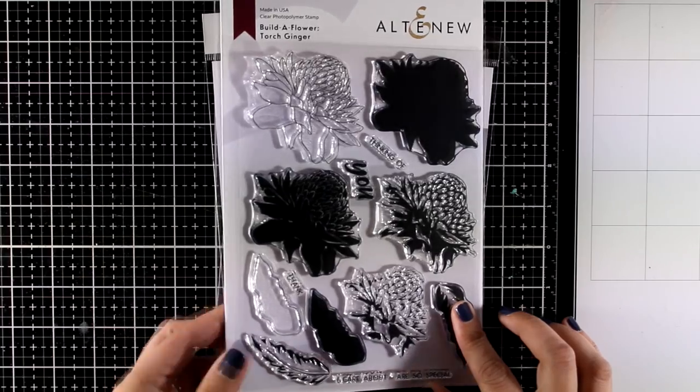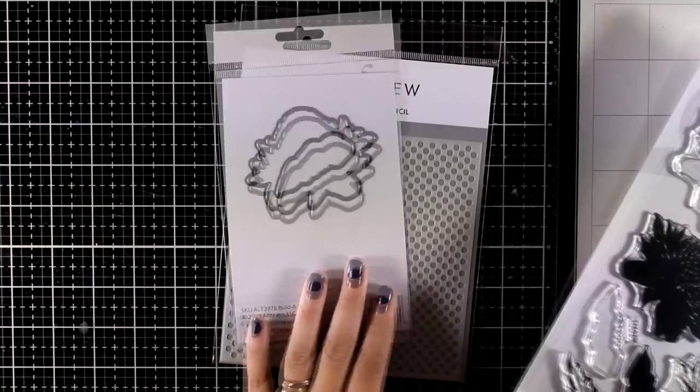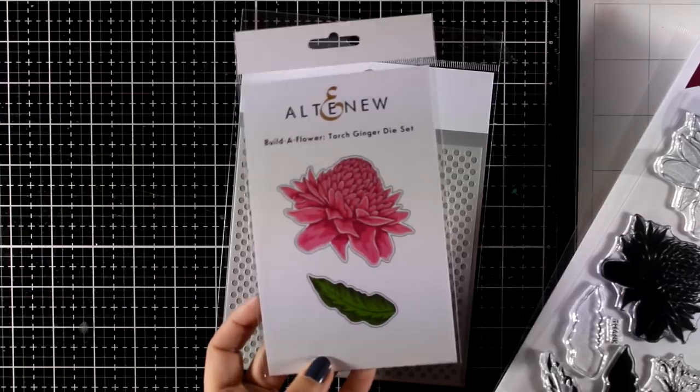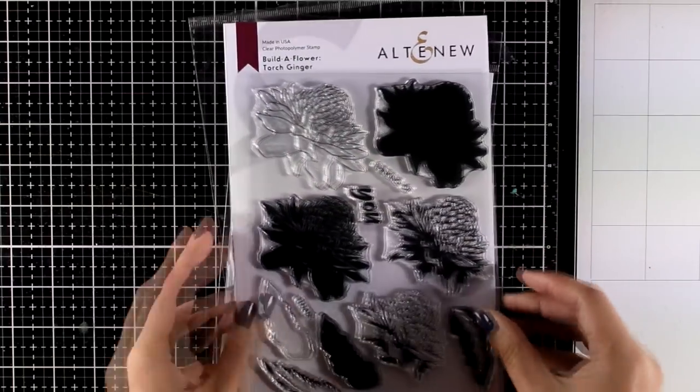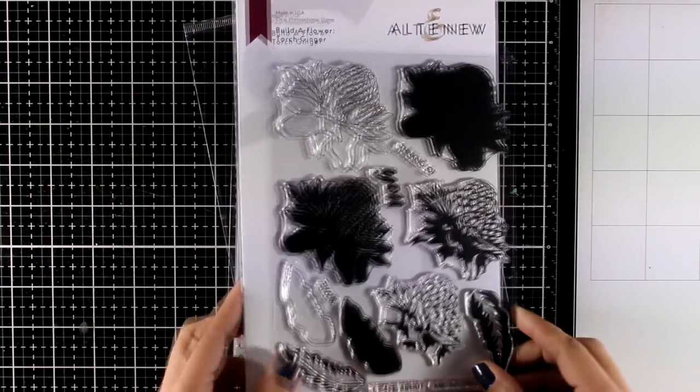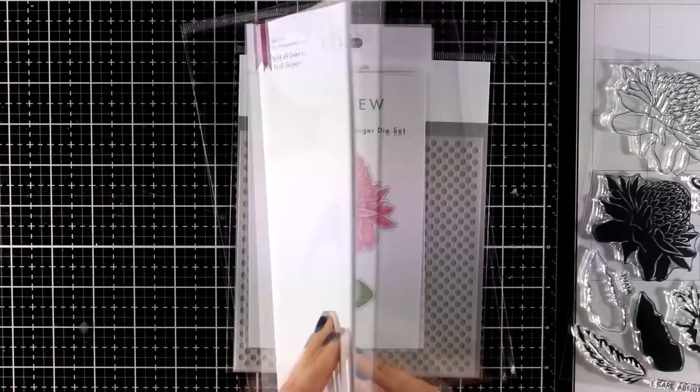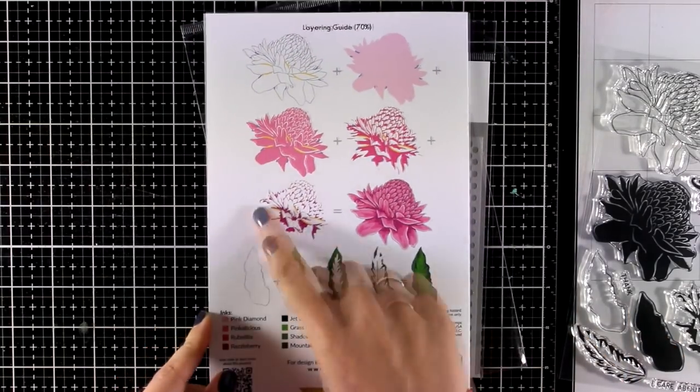It comes with lots of layers and is also available with the matching die. All the paint a flower stamp sets are released on the first of the month and come with matching dies.